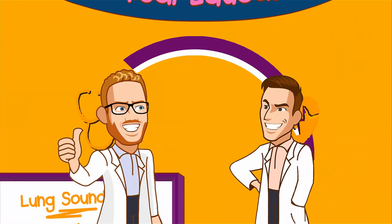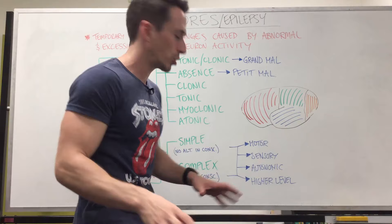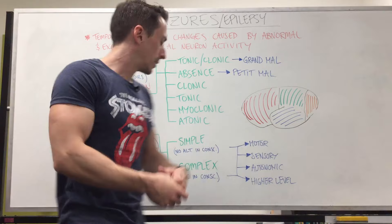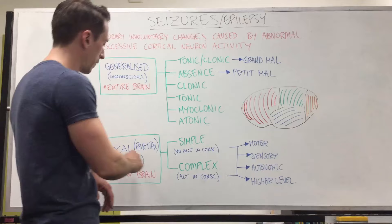We used to sub-classify partial seizures as simple or complex — simple meaning no alteration in consciousness, complex meaning there is an alteration in consciousness. However, as years have progressed we've determined that simple and complex are too difficult to use, because it's too hard to determine whether an individual has no alteration or an alteration in consciousness. So now we classify focal partial seizures as motor, sensory, autonomic, or higher level.